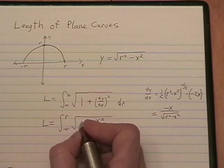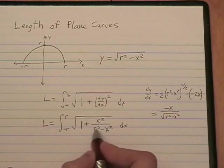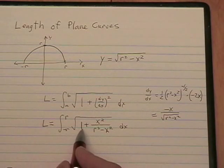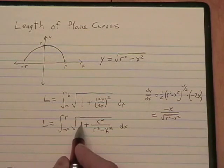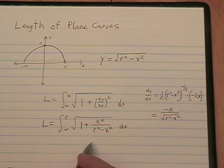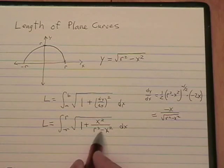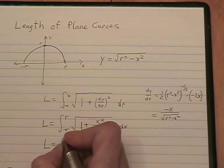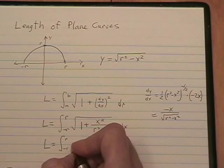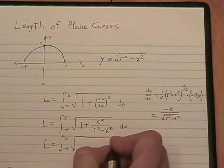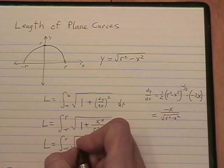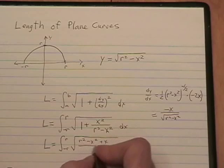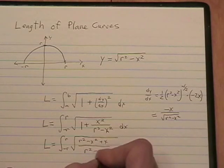So, I have a sum right here: 1 plus x squared over r squared minus x squared, which, of course, is a fraction. How do you add a whole number and a fraction? Well, you need a common denominator. And in our case, the common denominator is r squared minus x squared. So, check this out. I get r squared minus x squared plus x squared over r squared minus x squared.